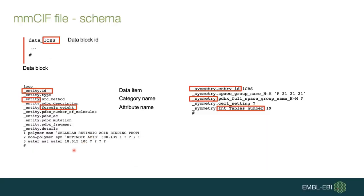The mmCIF files are composed of different data blocks. Each data block starts with the string 'data_' followed by a data block ID. Inside those data blocks, you can find data items organized into categories, and each of these data items has an attribute name. The value of those attributes can be either a string, as you can see on the example on the right-hand side, or an array of strings, as you can see on the left-hand side.